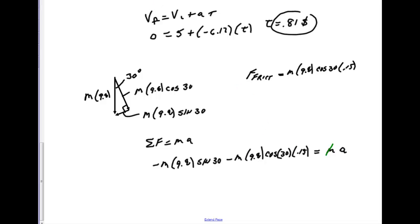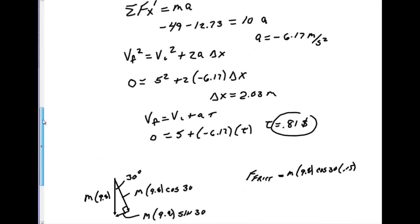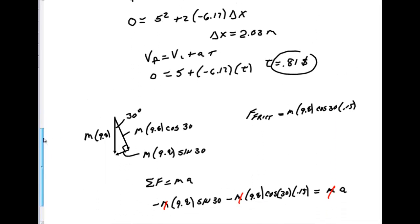You got mass on both sides of the equation. It cancels out. Mass is cancelled out here, here, and here. Mass plays no effect. You run that calculation, and I promise you, you'll get negative 6.17 as the acceleration.